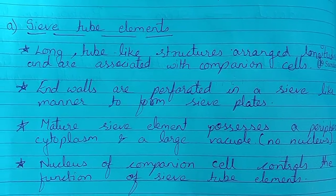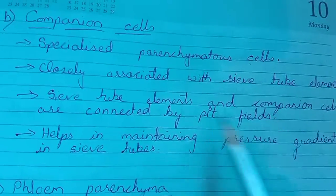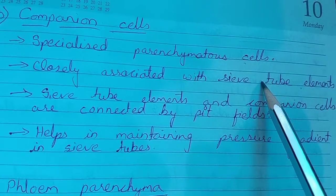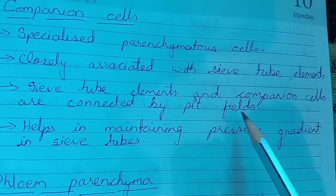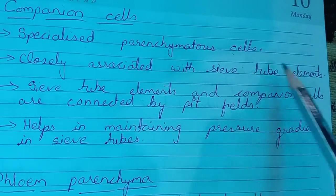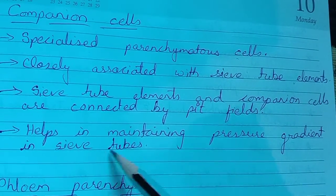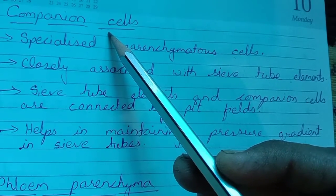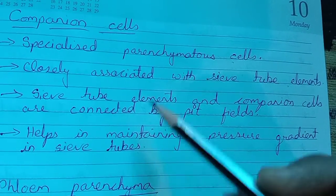Companion cells are specialized parenchyma cells closely associated with sieve tube elements. Sieve tube elements and companion cells are connected by pit fields. The companion cell's nucleus controls the sieve tube elements. Companion cells also help in maintaining the pressure gradient in sieve tubes, which is formed due to the movement of food materials.